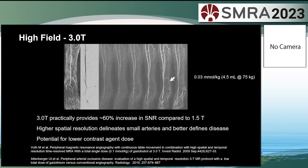3 Tesla gives us more SNR compared to 1.5T — maybe not quite as much as we'd hoped, but more nonetheless. This allows higher spatial resolution, better-defined smaller arteries, and there's also the potential for lower contrast agent dose for the same image quality.